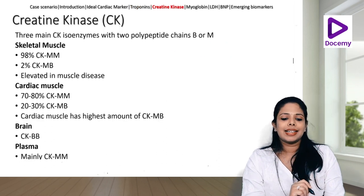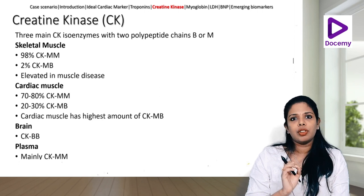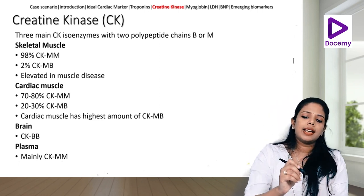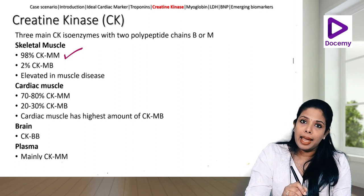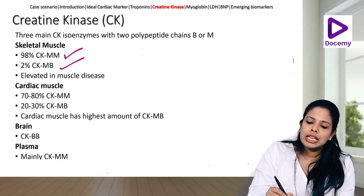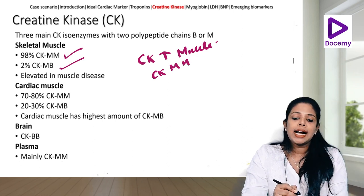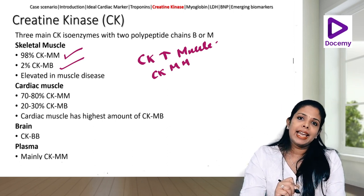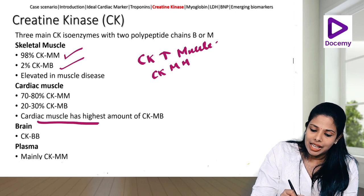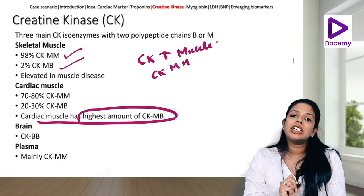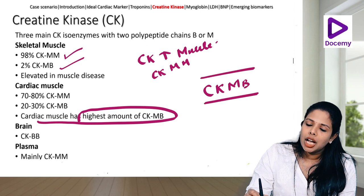Coming to the next cardiac biomarker — creatine kinase. There are three main isoenzymes with two polypeptide chains, the B and M polypeptide chains. In skeletal muscle, 98% of CK is MM and only 2% is MB. In cardiac muscle, 70 to 80% is CKMM and 20 to 30% is CKMB. CKMB is very specific for heart disease, which is why we use it as a biomarker.